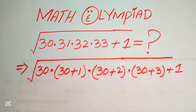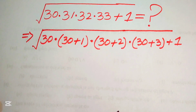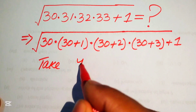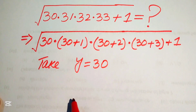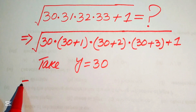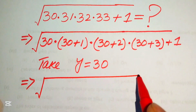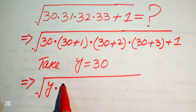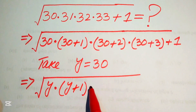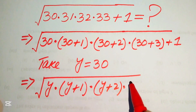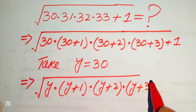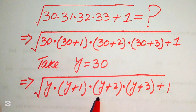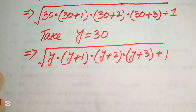Each term involves 30, so we let y equal 30. Substituting y for 30, our expression is written as y times (y plus 1) times (y plus 2) times (y plus 3), plus 1.